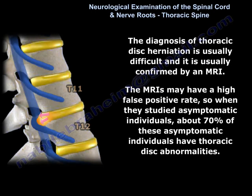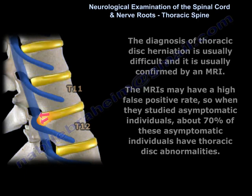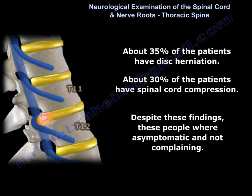Disc herniation between T11 and T12 may affect the conus medullaris and impact bladder function. The diagnosis of thoracic disc herniation is usually difficult and confirmed by MRI, though MRI has a high false positive rate. About 70% of asymptomatic individuals have thoracic disc abnormalities, 35% have disc herniation, and about 30% have spinal cord compression — yet these people were asymptomatic and not complaining.